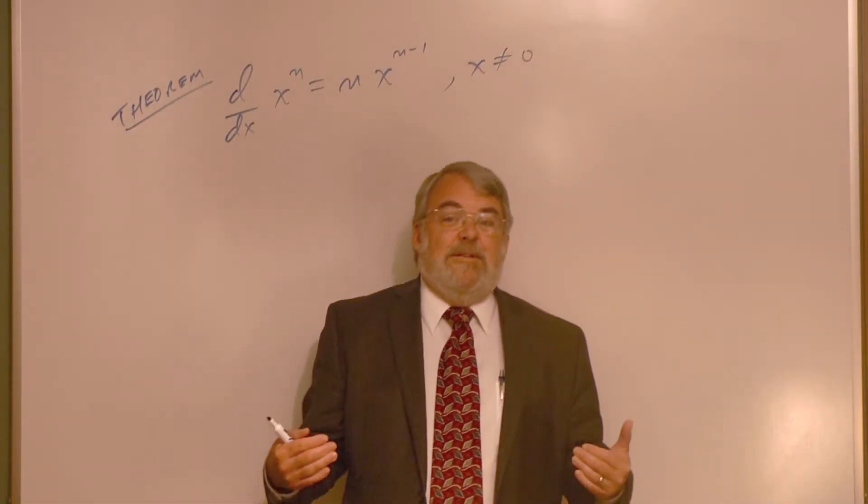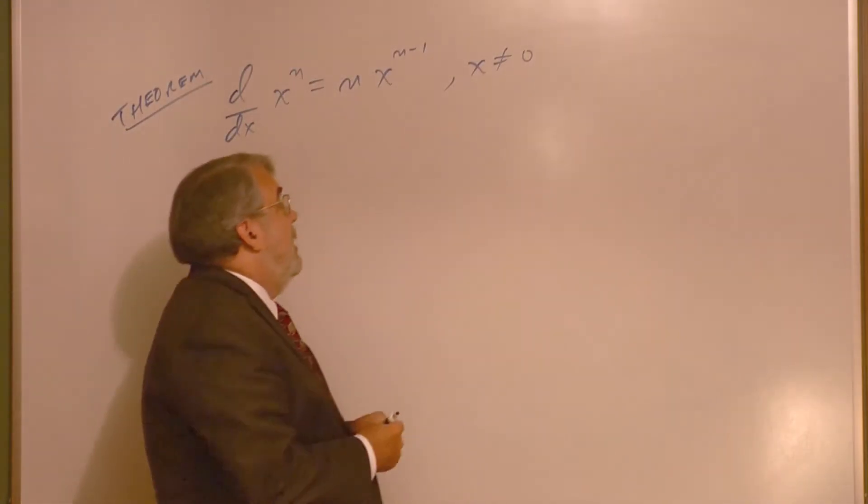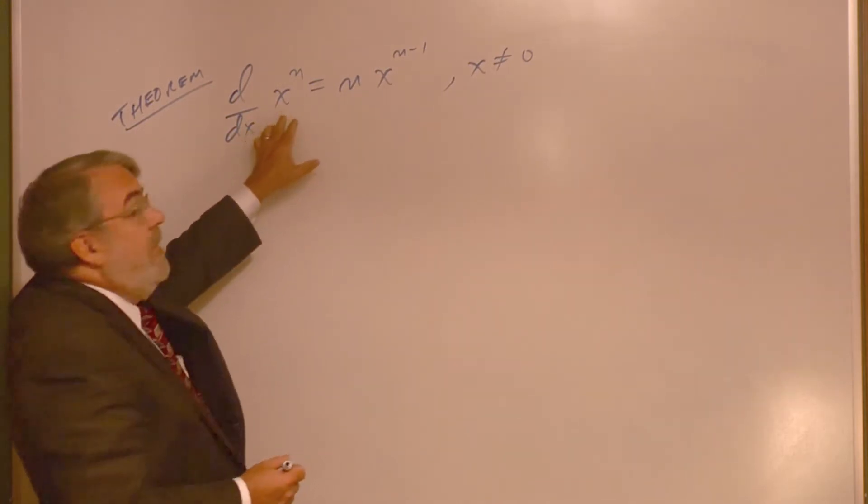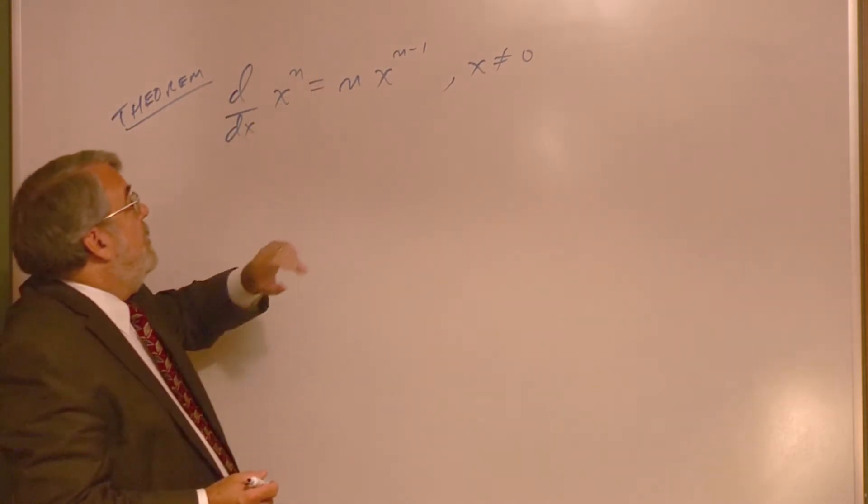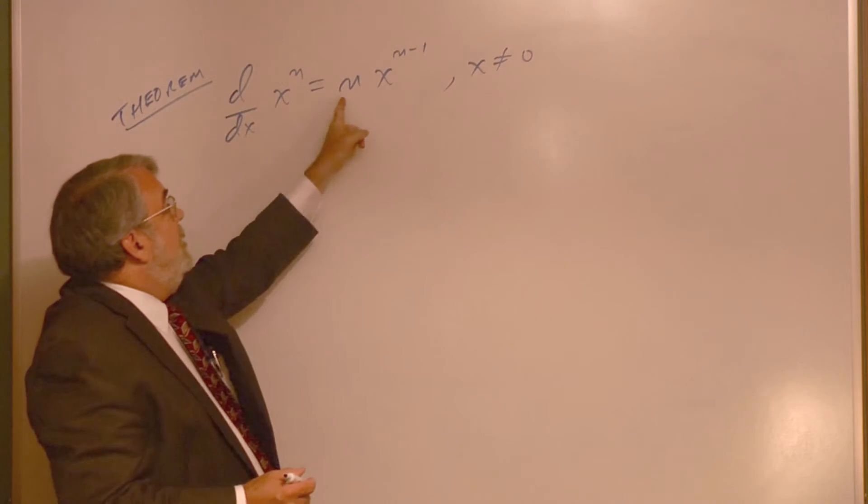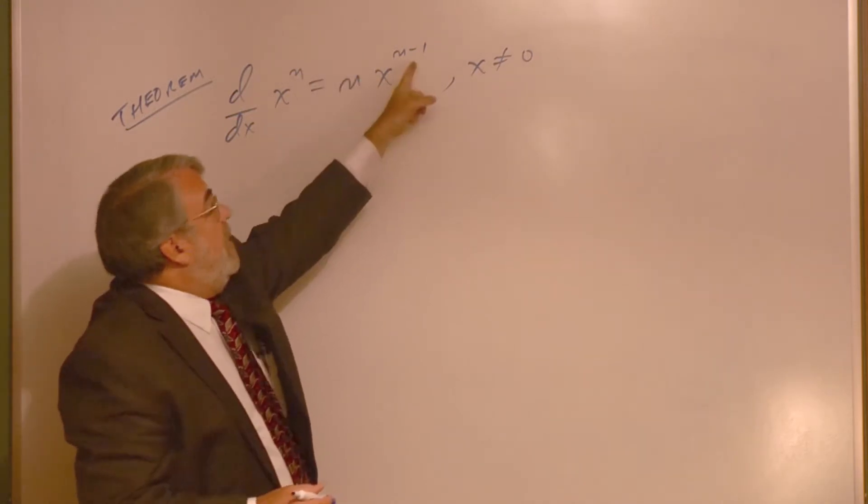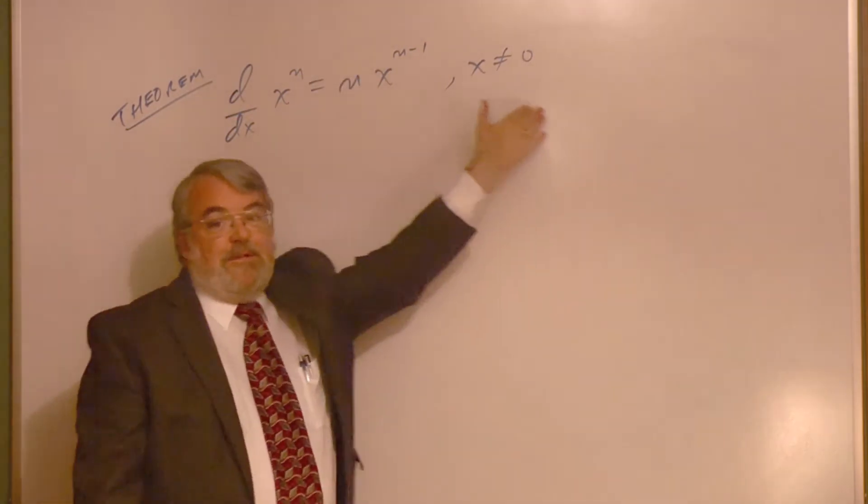Here's our first really great derivative theorem. The derivative of x to the n power is n times x to the n minus 1, provided that x is not equal to 0.